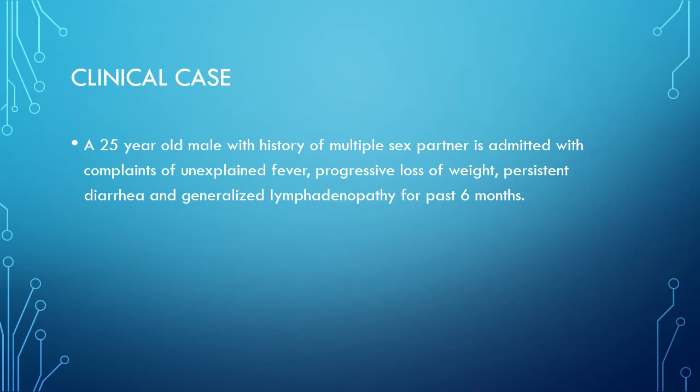Welcome to another e-learning session of the virology lecture series. Before moving to the lecture, we will discuss a clinical case. A 25-year-old male with history of multiple sex partners is admitted with complaints of unexplained fever, progressive loss of weight, persistent diarrhea, and generalized lymphadenopathy from the past six months. What will be the most probable diagnosis of this clinical picture?